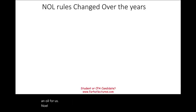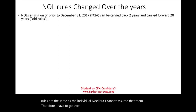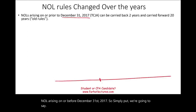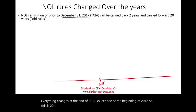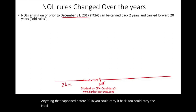NOL rules changed over the years, and these rules are the same as the individual NOL. For NOL arising on or before December 31st, 2017 — everything changes at the beginning of 2018. Anything that happened before 2018, you could carry the NOL back two years and carry it 20 years forward.